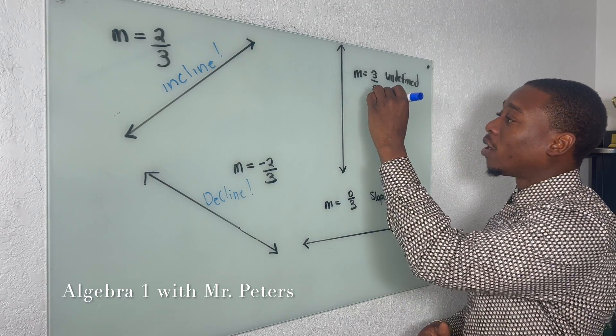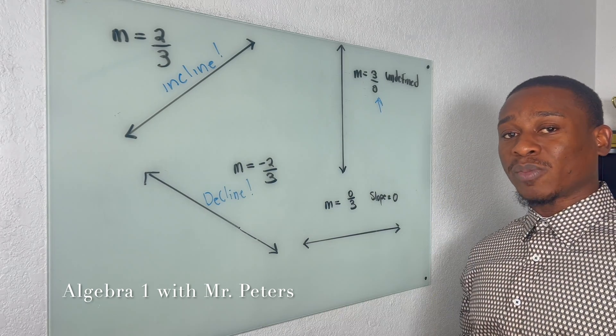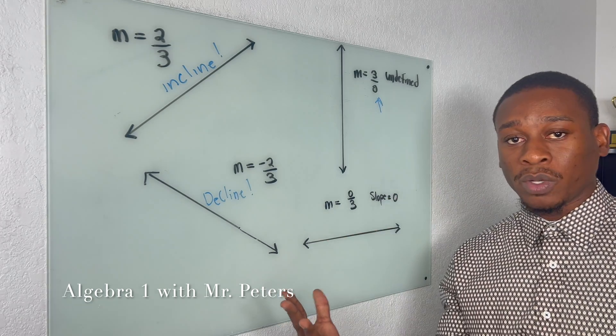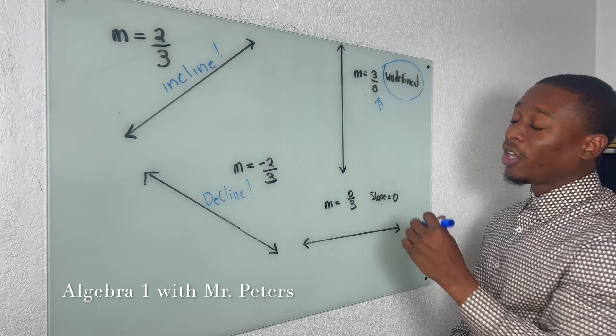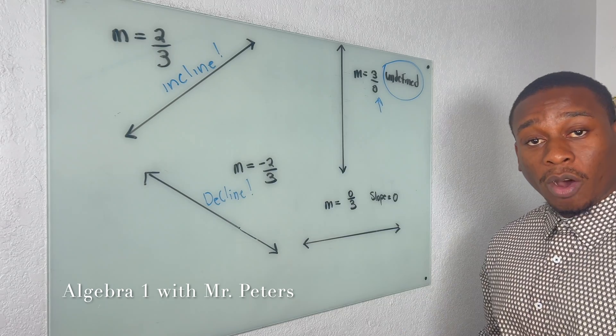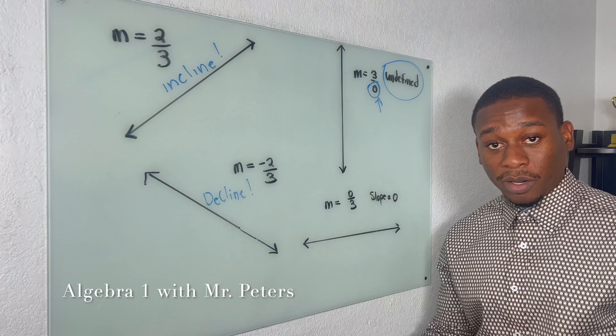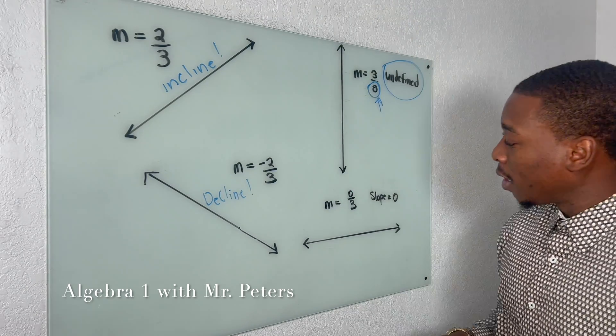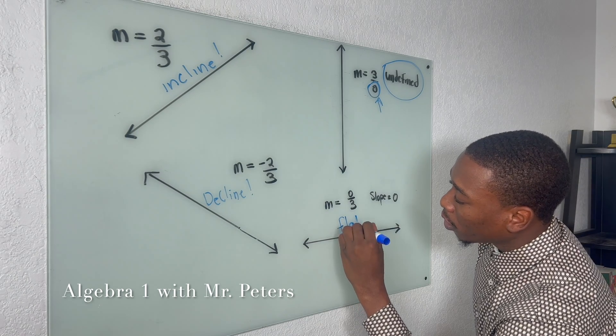Now in our third example, students get this confused the most because of the zero. Just remember, we cannot divide numbers by zero, there is no value. So what does that mean? Our slope is undefined, there is no slope at all. So pay attention to when you have a zero in the denominator, that means we have a vertical line.